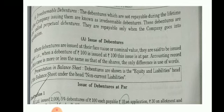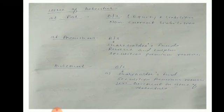Regarding how to record debentures in the balance sheet: they appear under equity and liabilities, sub-head non-current liabilities. When debentures are issued at a premium, that premium is a profit for the company. The premium received on issue of debentures is recorded under shareholders' funds as securities premium reserve.